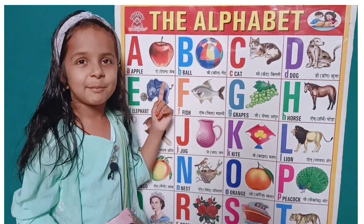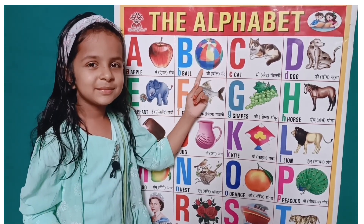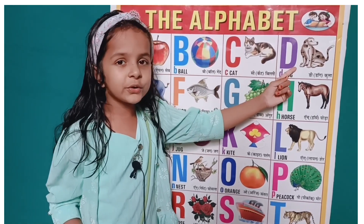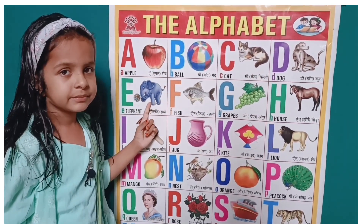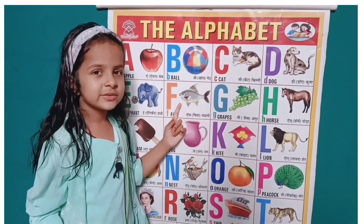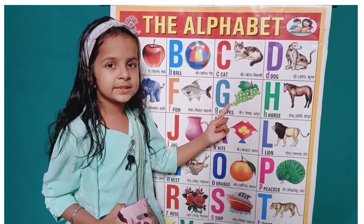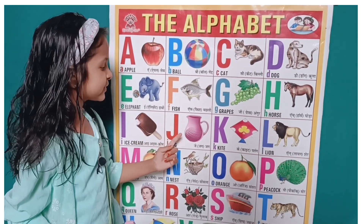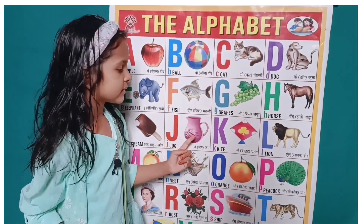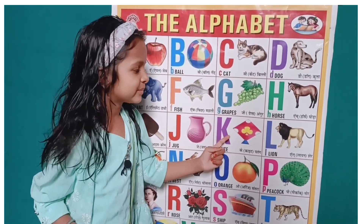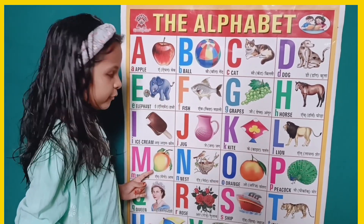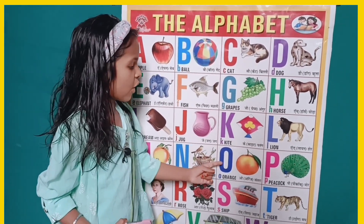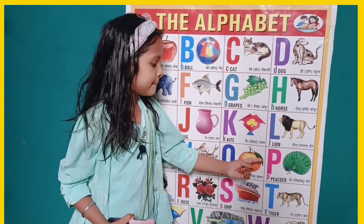A for apple, B for ball, C for cat, D for dog, E for elephant, F for fish, G for grapes, H for horse, I for ice cream, J for jar, K for kite, L for lion, M for mango, N for nest, O for orange, P for peacock.